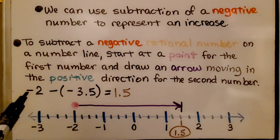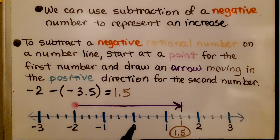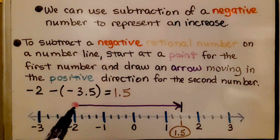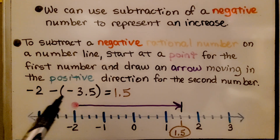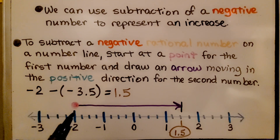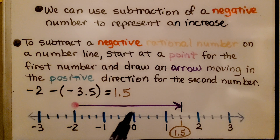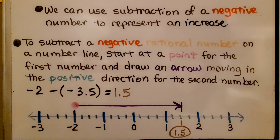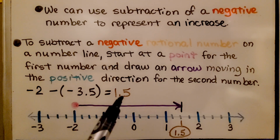So we have negative 2, so we start at negative 2. Here's 0, so that's negative 2 — draw our point. And we're subtracting a negative 3 and 5 tenths, so we're going to head towards the positive: 1, 2, 3 and a half. It's going to put us at positive 1 and 5 tenths. That is our difference.